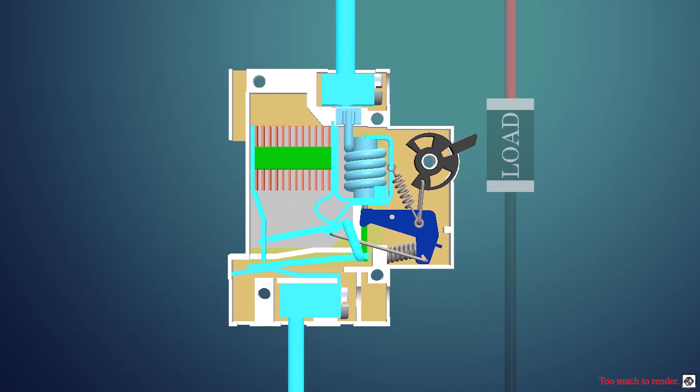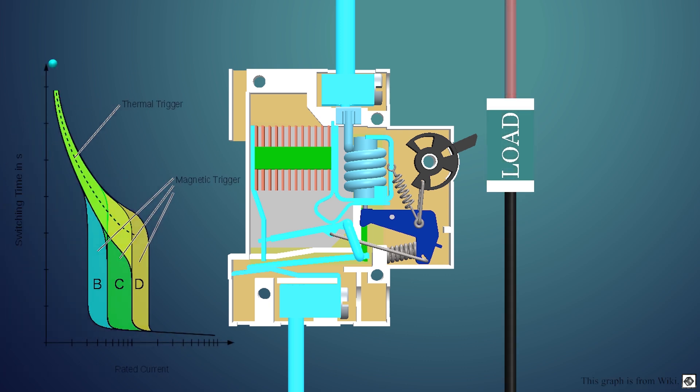First, we will see the overload situation. When the MCB is on, the current flows through the bimetallic strip, and thus the strip starts bending. Its bending depends on how the strip is manufactured, so different strips bend by different amounts for the same current. Also, the bending of the strip depends upon the heat generated by the current through it.